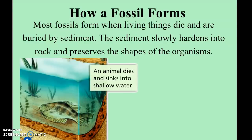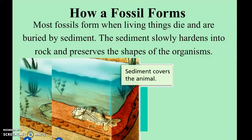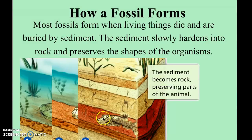Most fossils form when something dies. In this picture, a fish has died and sinks to the bottom, then gets buried by sediment. This process has to happen quickly or the organism won't be preserved. The sediment covers the organism and preserves its shape and structure. Soft tissue and muscle tissue will decay, so what becomes fossilized is primarily the hard parts, like bone.